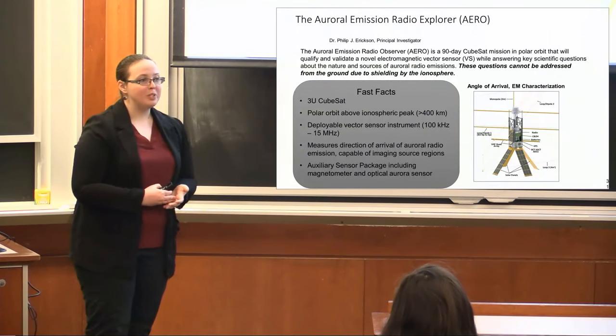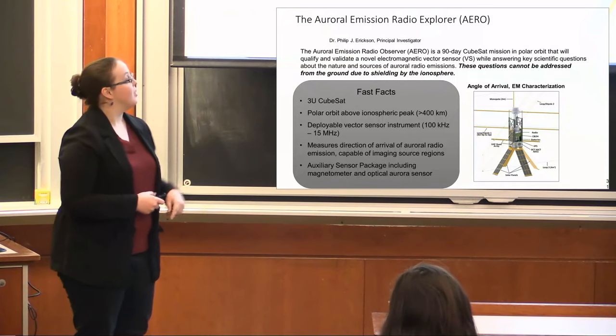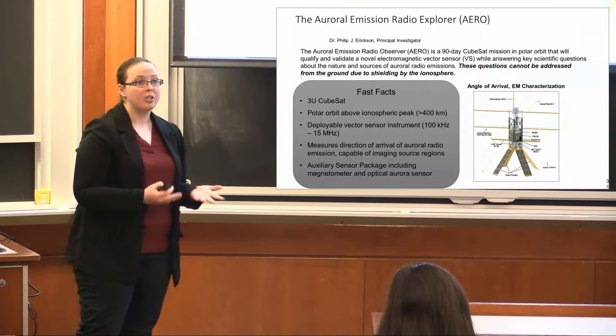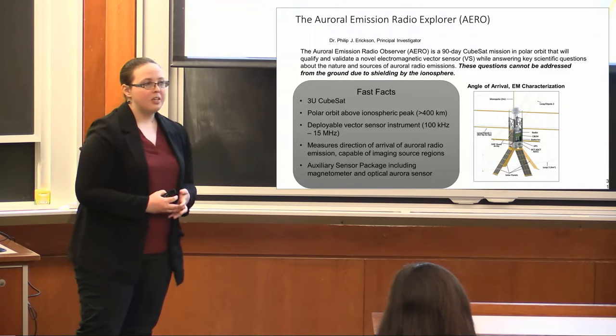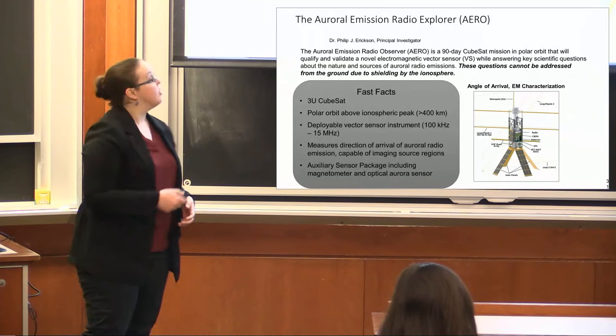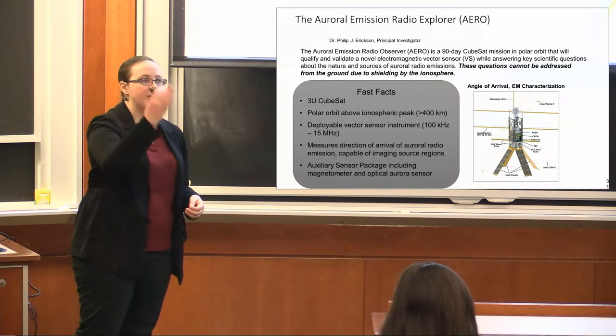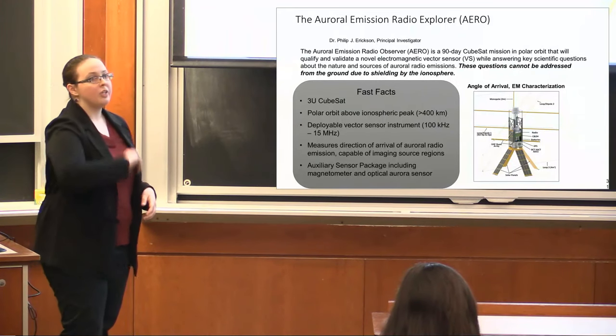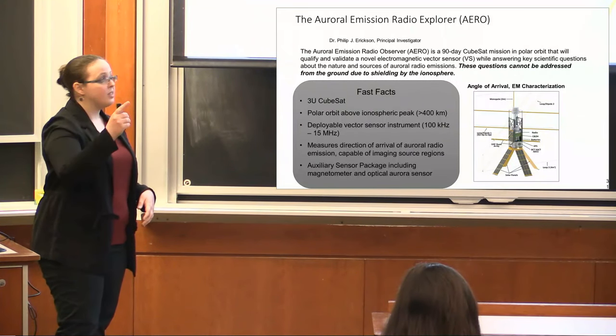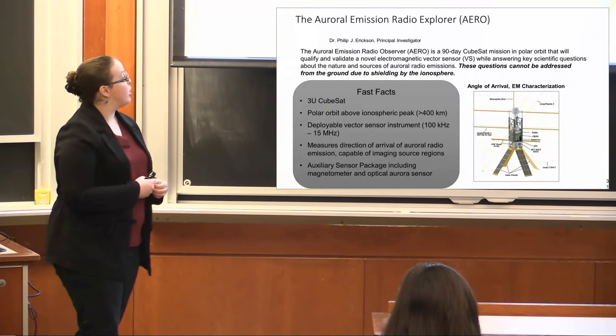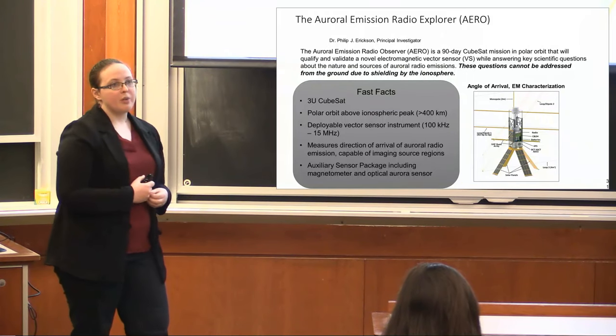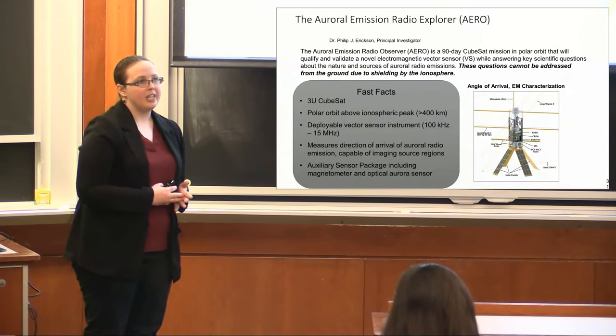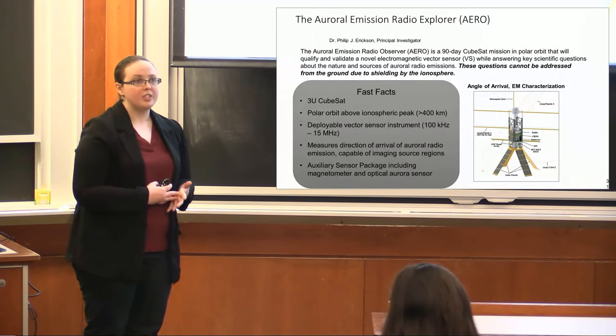So, we're going to put that on a satellite. And, in fact, we have been funded to build a spacecraft and fly this thing. This is called AERO, the Auroral Emission Radio Explorer. As I said, the Earth's aurora emits strongly in radio, and, in fact, we haven't studied that in detail. There's a lot of unanswered questions about the Earth's radio aurora. So, this mission is going to fly through the aurora and use this vector sensor to localize where auroral emission is coming from in a way that really has not been done before. So, it's a 3U CubeSat will be in a polar orbit above the peak of the ionosphere with a deployable vector sensor sensitive from about 100 kilohertz up to 15 megahertz. It will measure direction of arrival of auroral emission, and it will also have some additional sensors, probably. We're just starting defining the requirements for this mission. We just got funded fairly recently, so stay tuned.